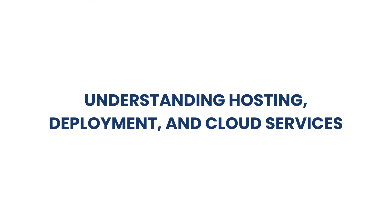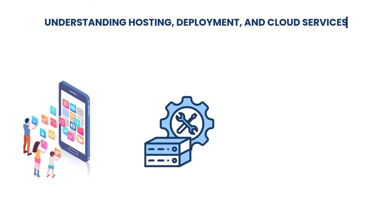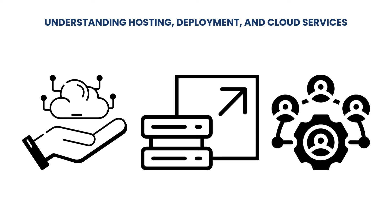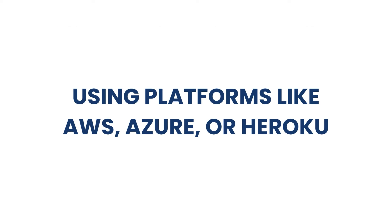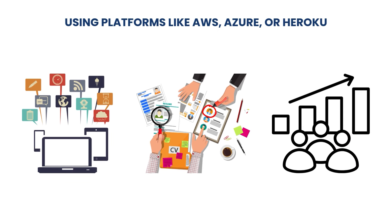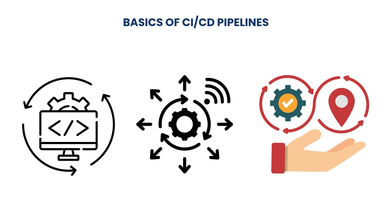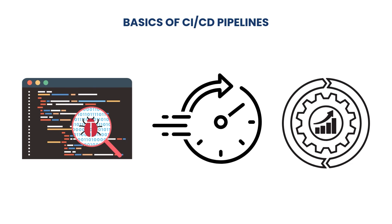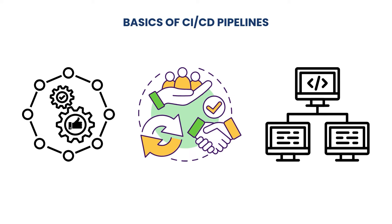Learning DevOps basics includes understanding hosting, deployment, and cloud services. Hosting refers to storing web applications on servers, while deployment involves making them accessible to users, and cloud services provide scalable resources and infrastructure. Platforms like AWS, Azure, and Heroku offer tools for deploying and scaling applications based on user demand. CI/CD pipelines automate the process of testing and deploying code changes, ensuring faster delivery and improved software quality through consistent integration and deployment practices.